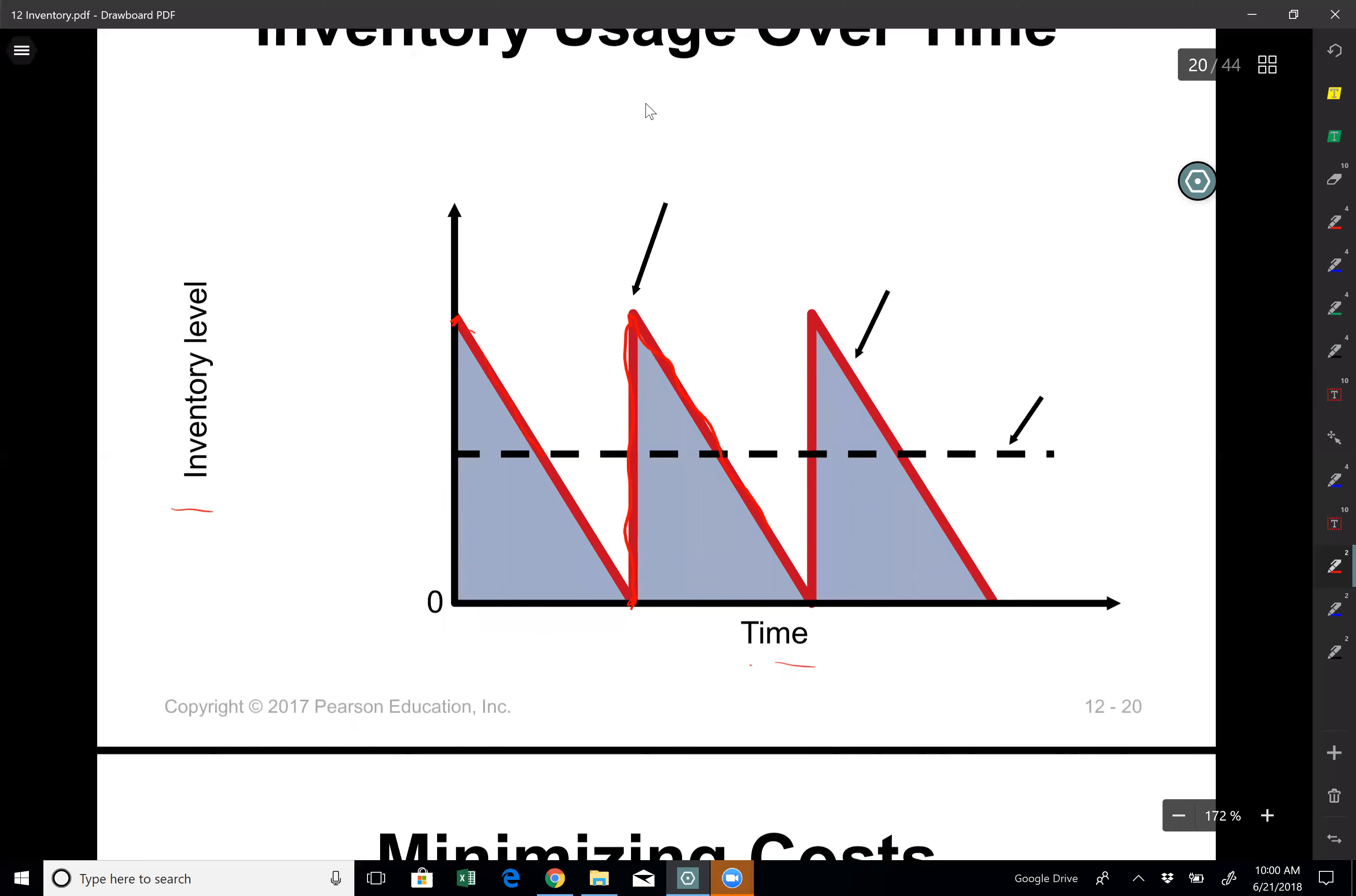Again I sell my products and again instantaneously I get my orders replenished and so on. So here this dotted line here is called average inventory on hand. Average inventory on hand and this quantity right here is Q over 2. So what's Q?